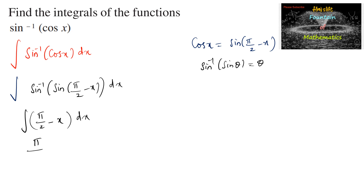So we can write integral of π/2 is π/2 · x, minus the integration of x which is x²/2, plus c. So π/2 · x − x²/2 + c is the answer.